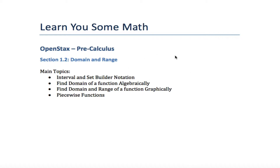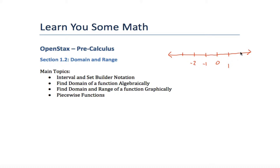But what if your answer has infinitely many numbers in it — what if your answer is an interval? For example, what if the answer is all of the numbers from negative two up to positive one? Not just negative two, negative one, zero, and one, but the infinitely many numbers in between — the fractions, the decimals, all that. And what if you wanted to include negative two but not include positive one? Let me show you how to write your answer if this picture represented your answer.